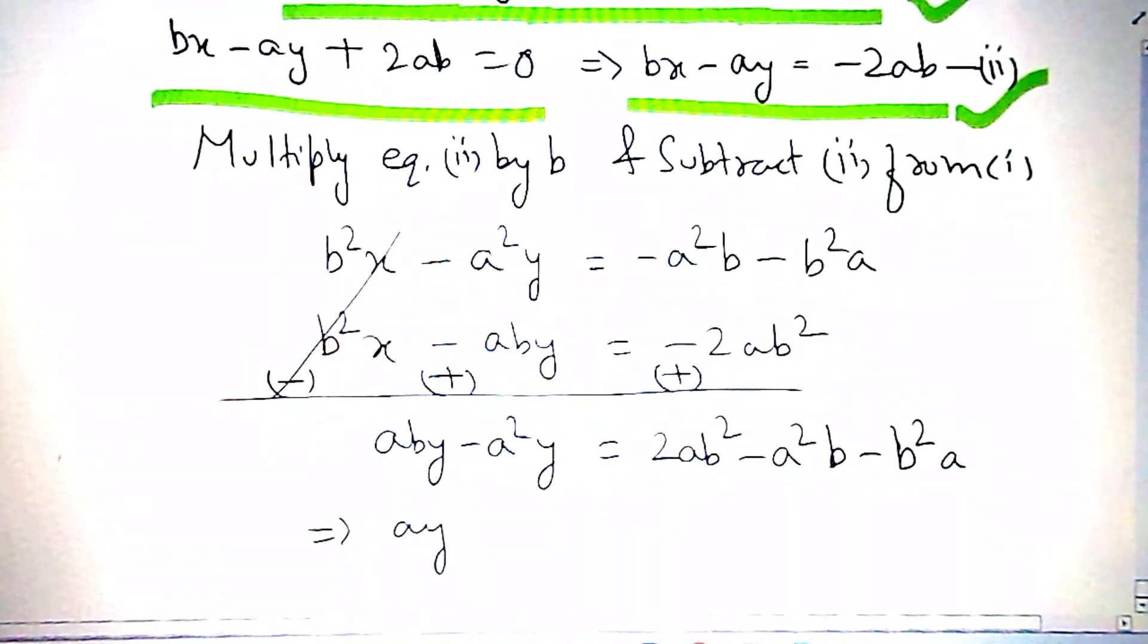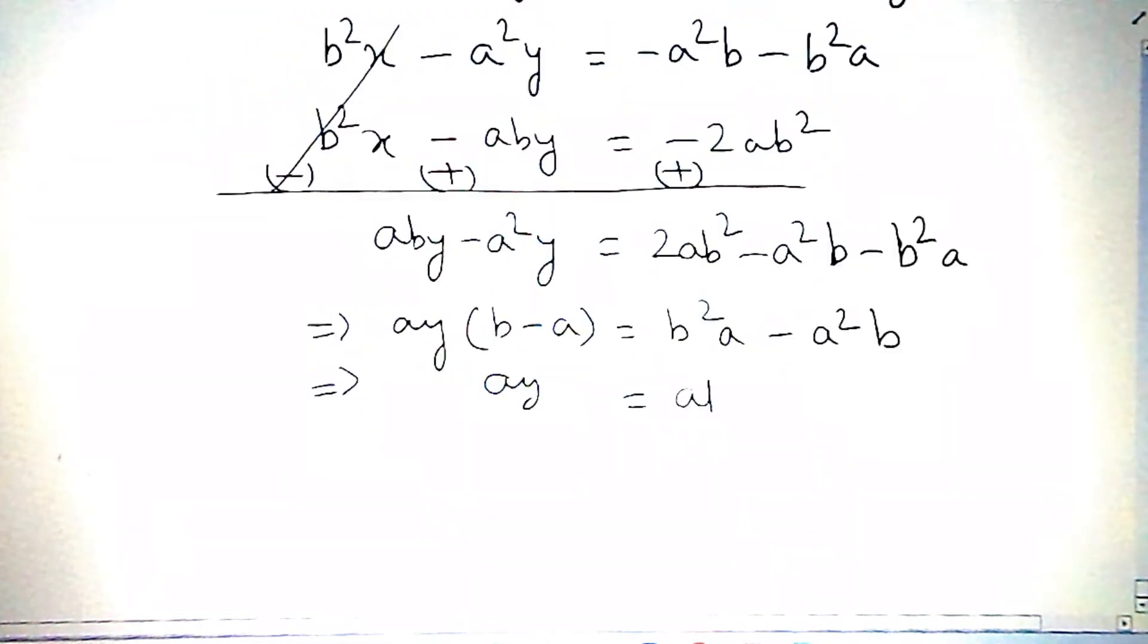aby will get common, then we have b - a = b²a - a²b. Therefore, ay = ab will get common, then we have b - a divided by b - a.